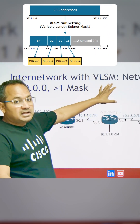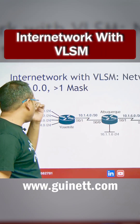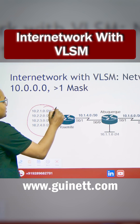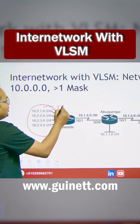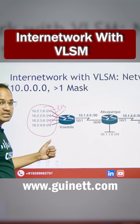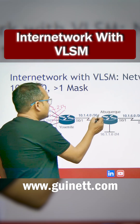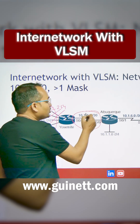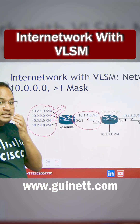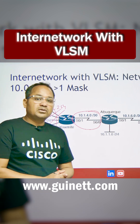VLSM — Variable Length Subnet Mask — allows you to use variable subnet masks for different networks. With a /24 network, every subnet gets 254 valid IP addresses out of a total of 256. But if you only require two valid IP addresses, you have to use a /30 subnet.